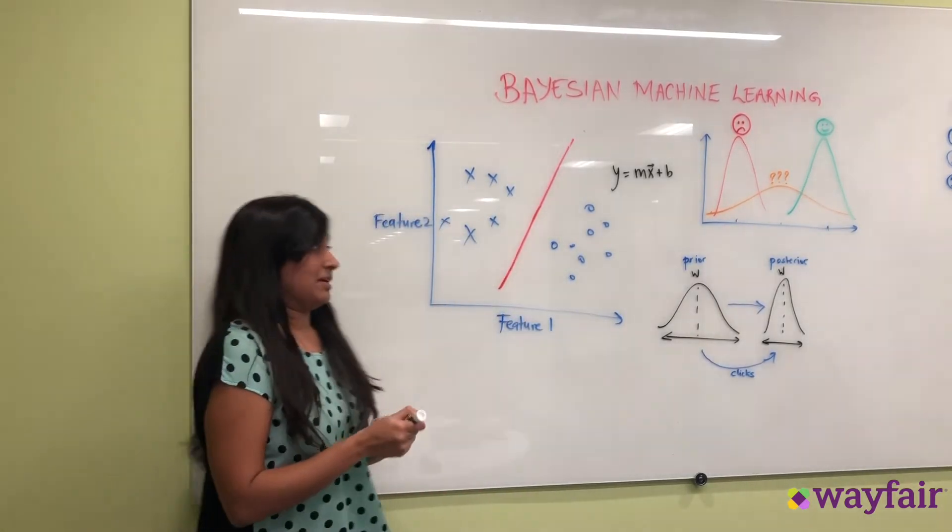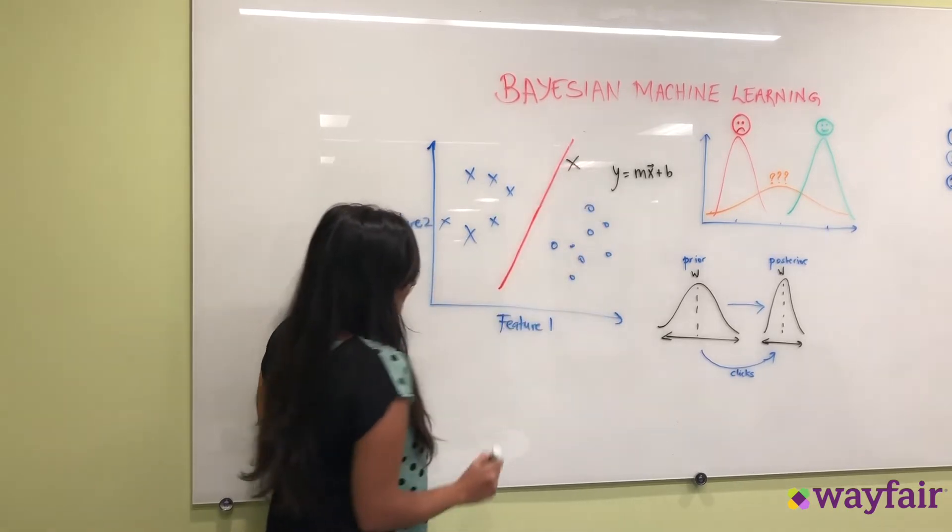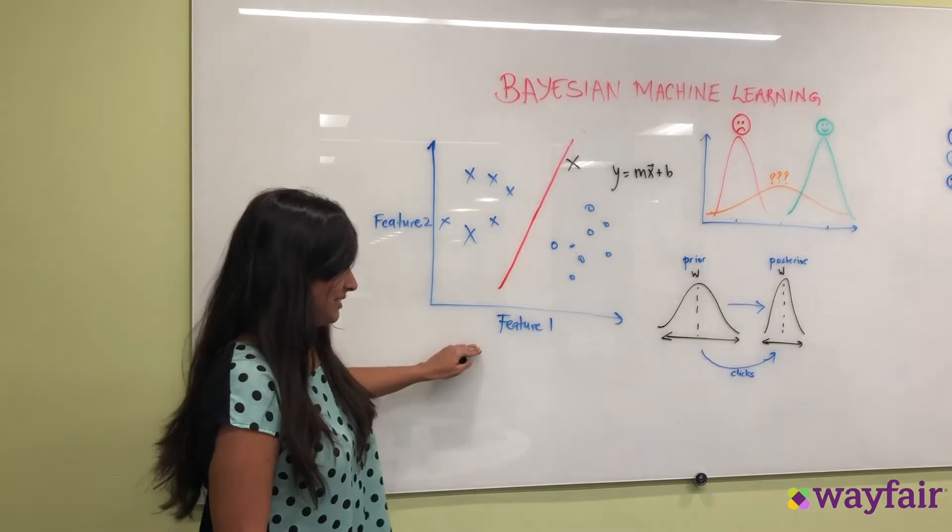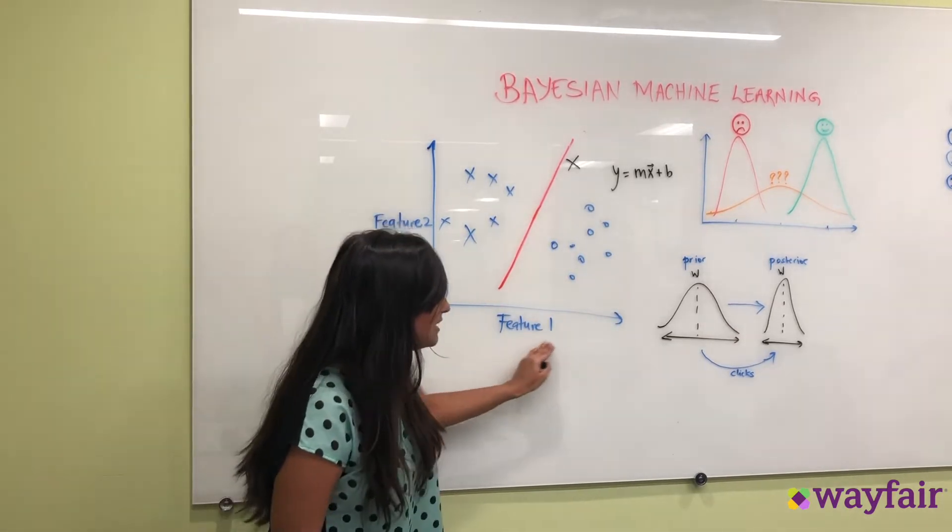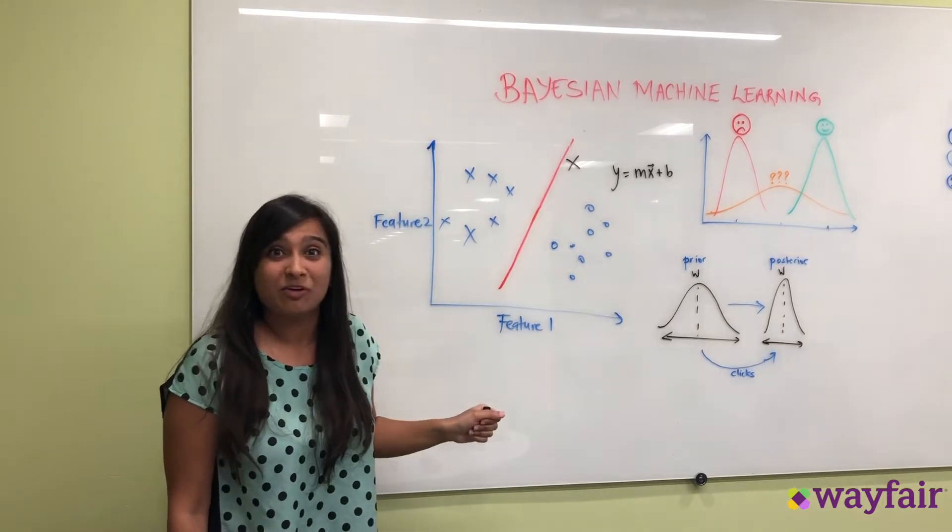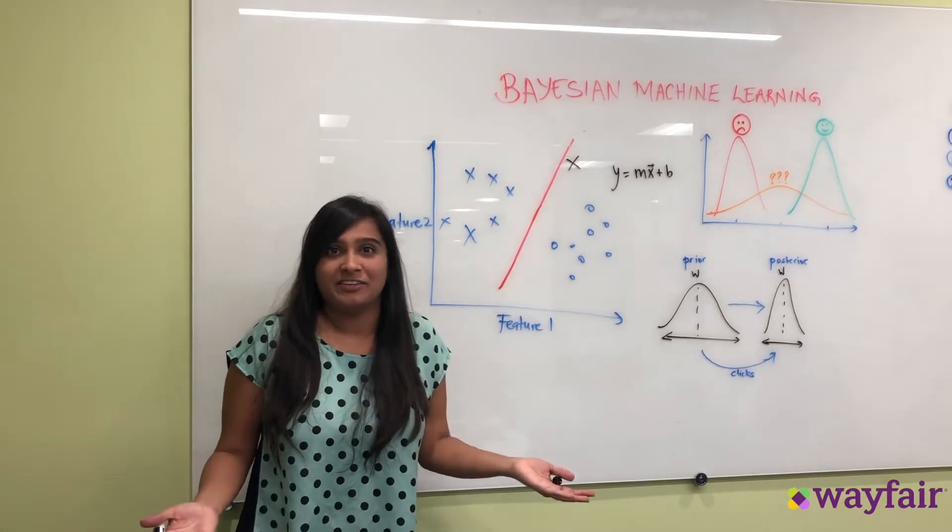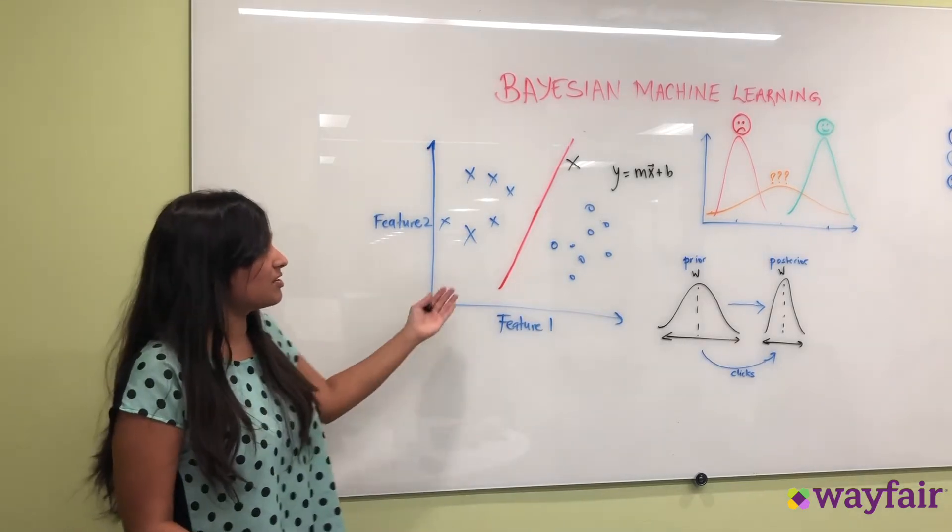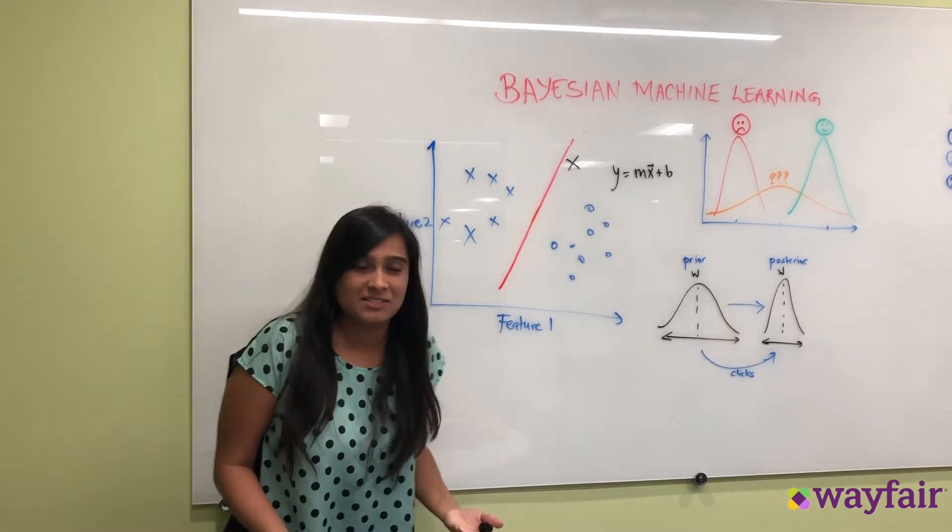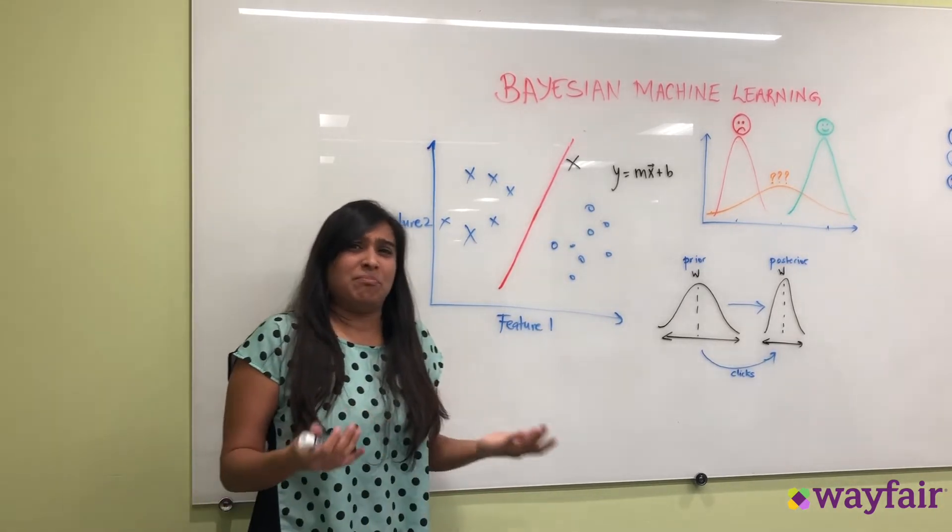The problem is what happens when you get a data point here? This is not a hot dog that is a little squishier and maybe a little longer than all the hot dogs you've seen before. And in the machine learning framework you're going to misclassify it. You're not going to be able to tell it's a hot dog because based on your past data it's not consistent with what you think hot dogs look like. So what if you were to use a Bayesian framework?